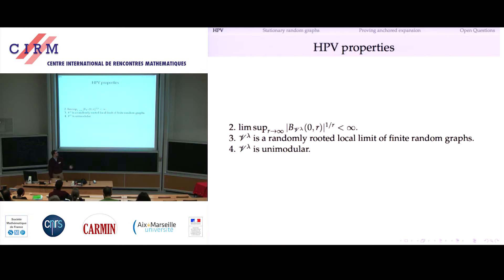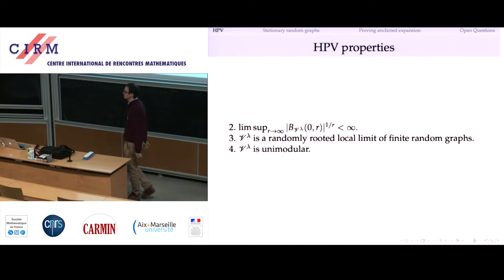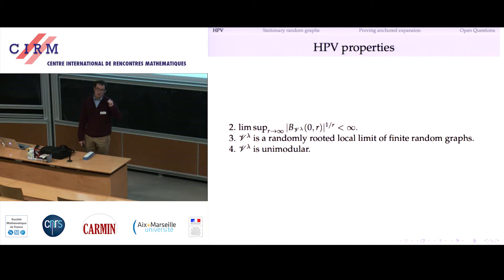The last property is that this is a unimodular random graph. All of these properties hold in much bigger generality — you can do everything I just said working on a Riemannian symmetric space of non-compact type, certainly including all the hyperbolic spaces.